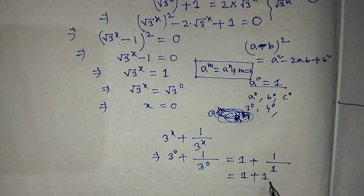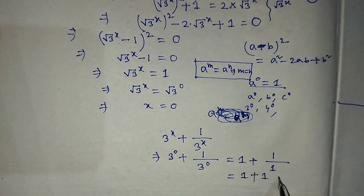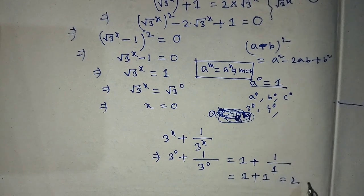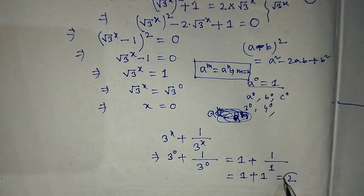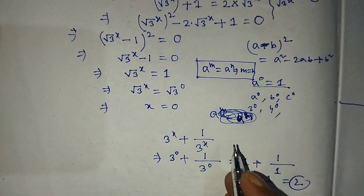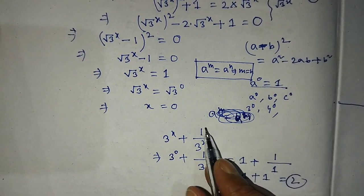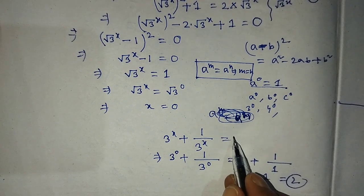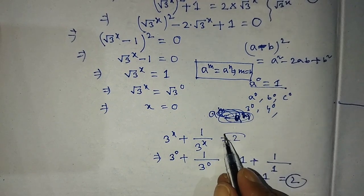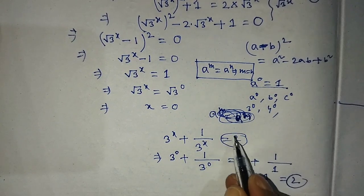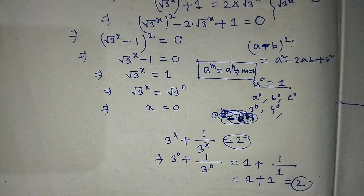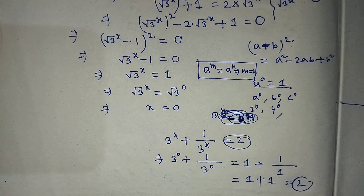Adding 1 and 1 gives 2, so our answer is 2. The value of this algebraic expression is 2, and this is our final answer. If you like this video and this trick, please support me and subscribe to my channel. Thank you, bye-bye.